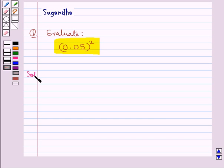Let's move on to the solution now. We need to evaluate 0.05 whole square. This is equal to 0.05 multiplied by 0.05.